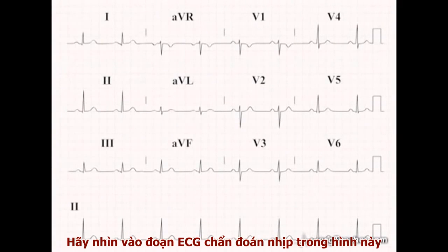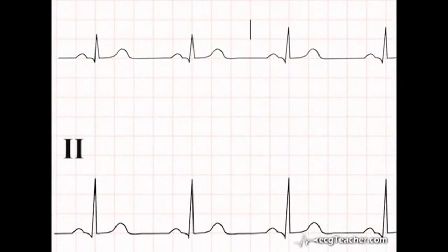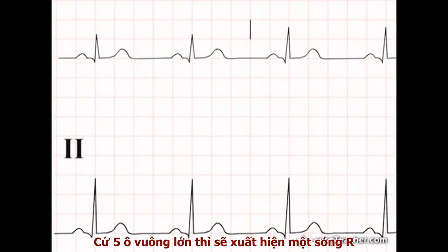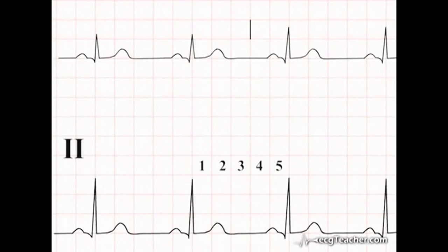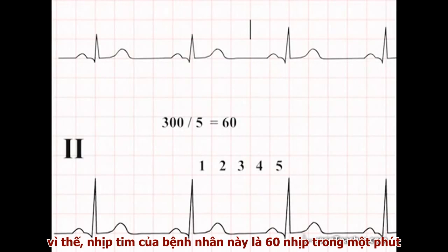Look at the rhythm strip on this ECG. There is one R wave present to every 5 large squares. So in 300 large squares there will be 60 R waves present. This patient's heart rate is therefore 60 beats per minute.